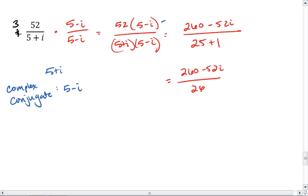We get 260 minus 52i all over 26. And I did skip a couple of algebraic steps between this form and this form. But if you work them out completely like I did in the first example, then it should be okay for you. But that is our final answer.